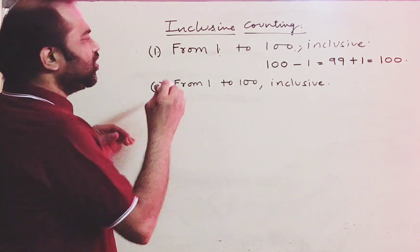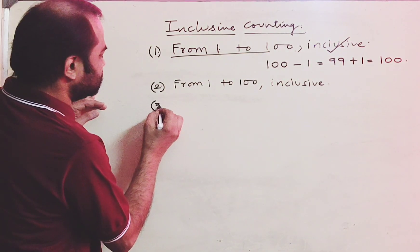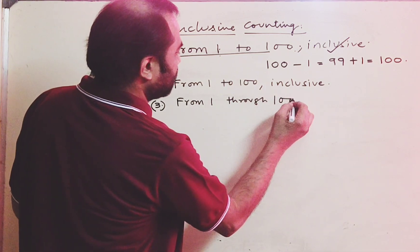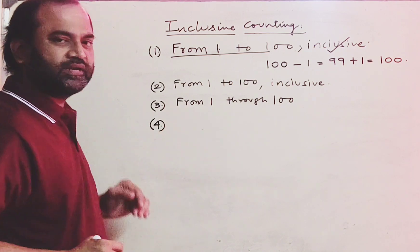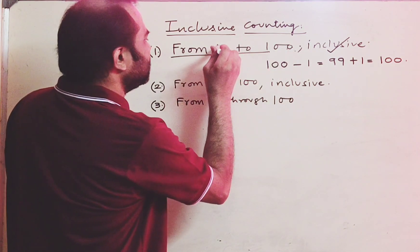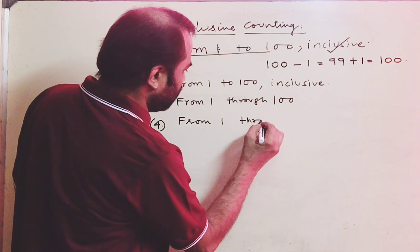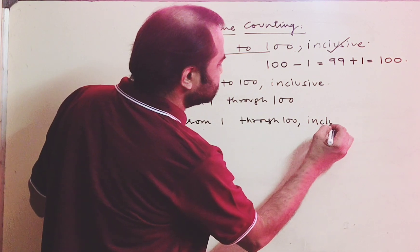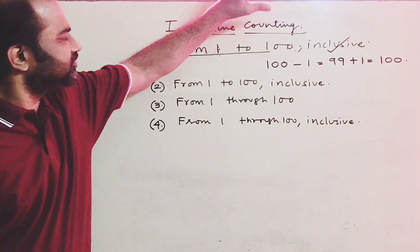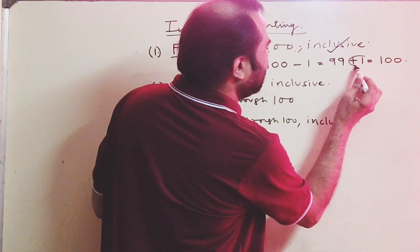By default, the meaning of the sentence 'from 1 to 100' is always inclusive. Other expressions for inclusive counting are 'from 1 to 100' and 'from 1 through 100 inclusive', with the word inclusive suffixed at the end. Inclusive counting means counting all the numbers between the first and the last, including the first and the last. The method to find the number of integral numbers for inclusive counting is to add 1 to the difference.